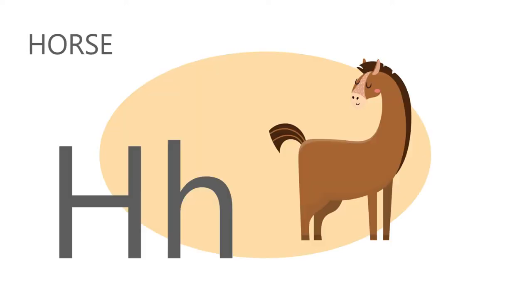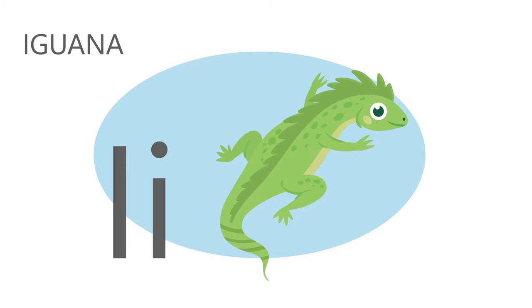H is for horse. H, h, horse. I is for iguana. I, i, iguana.